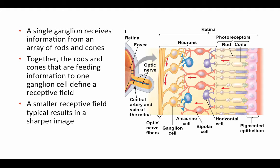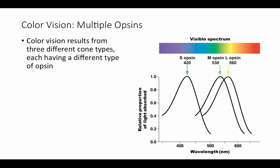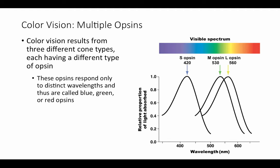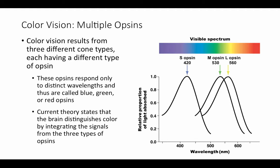Now let's think about color vision and how it comes about. It comes about because there are different versions of opsin proteins in the cones. Color vision results from three different cone types, each having a different type of opsin. These opsins respond only to distinct wavelengths and are called blue, green, and red opsins — very similar to the different pigment molecules in plants that are responsive to particular wavelengths. The current theory holds that the brain distinguishes color by integrating the signals from the three types of opsin, blending signals from these different cone types to detect all fine gradations of color.